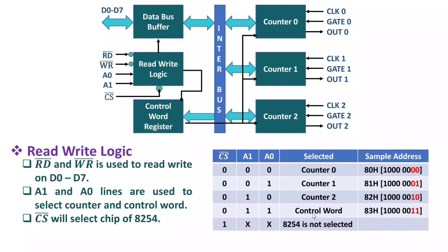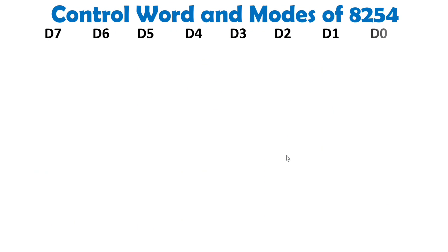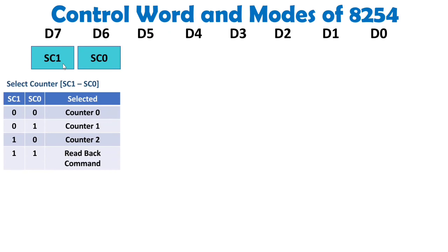When A1 A0 equals 1 1, the control word address is selected and we can load the control word. The control word is 8 bits and it justifies how many modes are there and how 8254 will function. The initial 2 bits indicate which counter is selected: 0 0 selects counter 0, 0 1 selects counter 1, 1 0 selects counter 2, and 1 1 is for the read-back command.